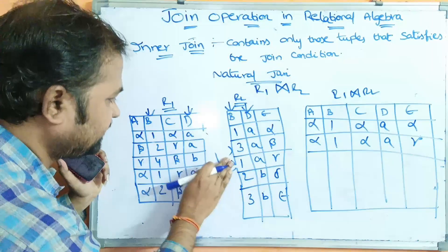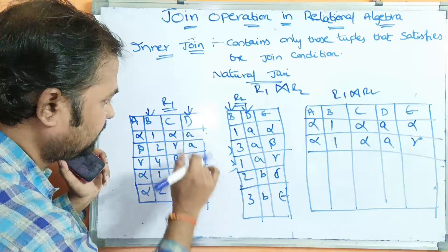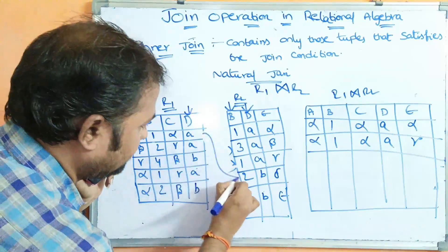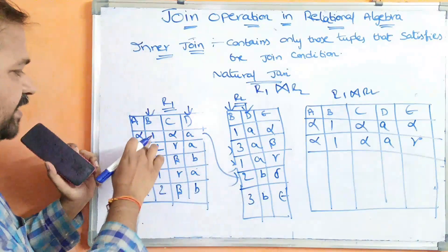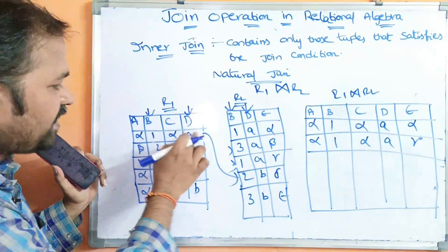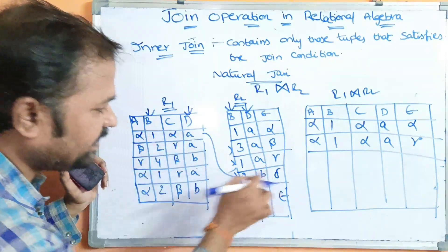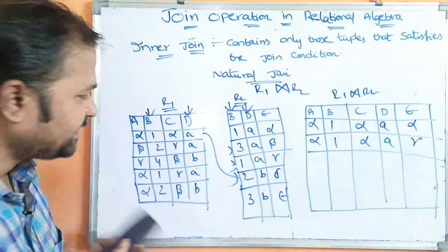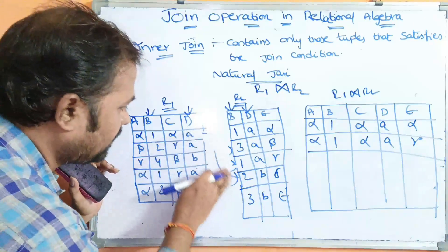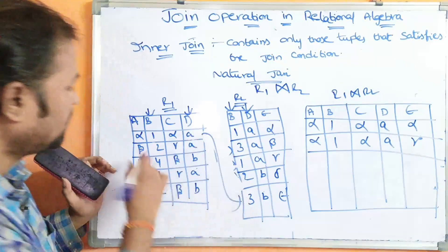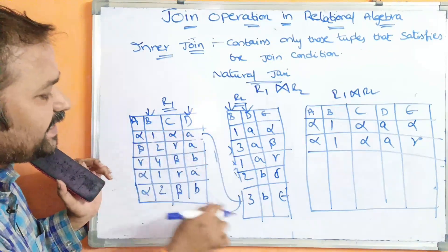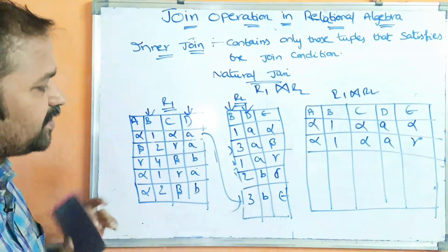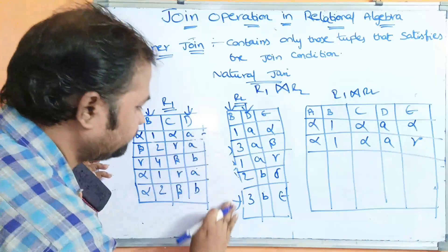Next, 1A compared with 1A — matched. So these two rows will be combined: the result is Alpha, 1, Alpha, A and E is Gamma. Next, 1A compared with 2B — not matched. Next, 1A compared with 3B — not matched.